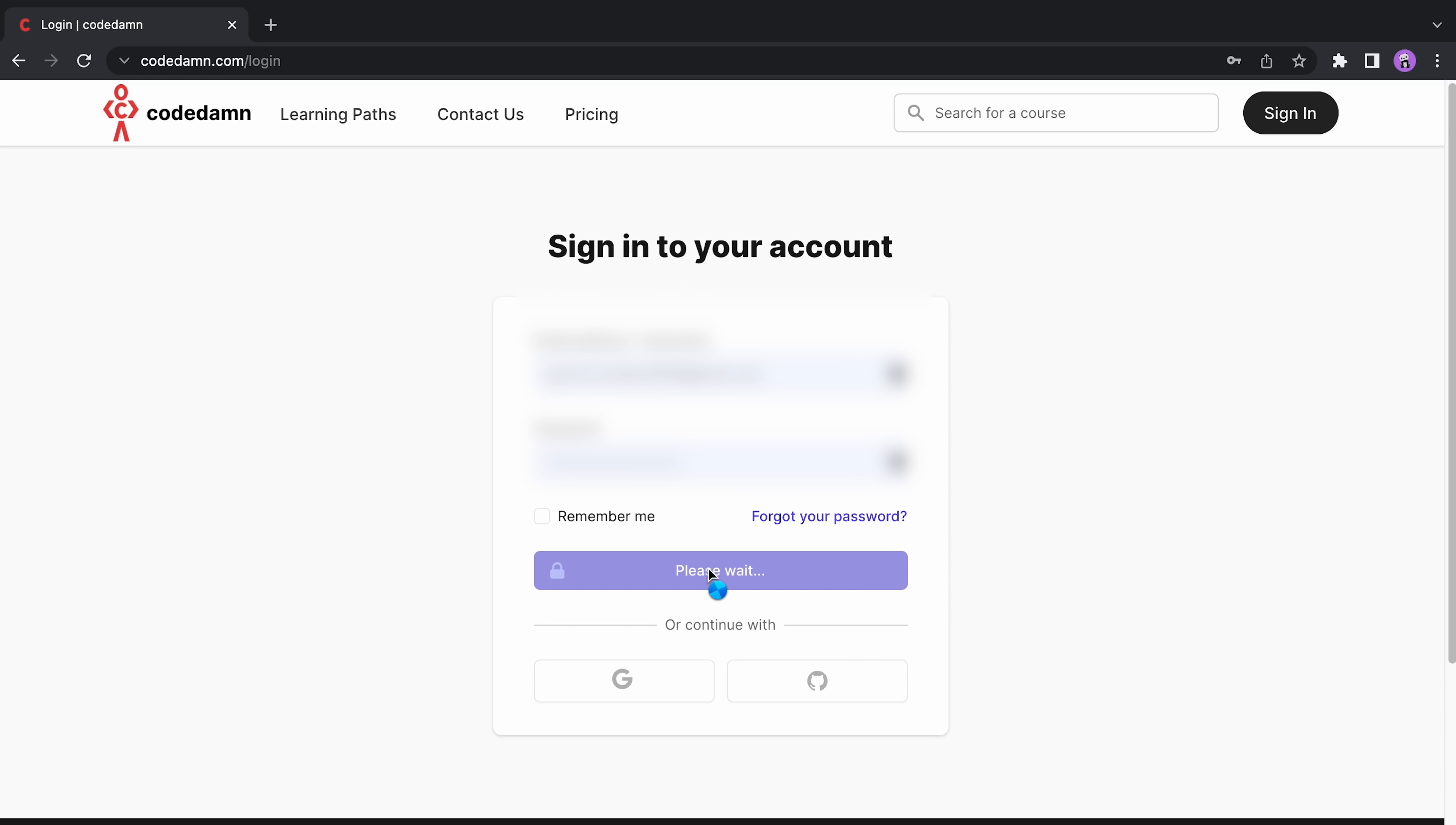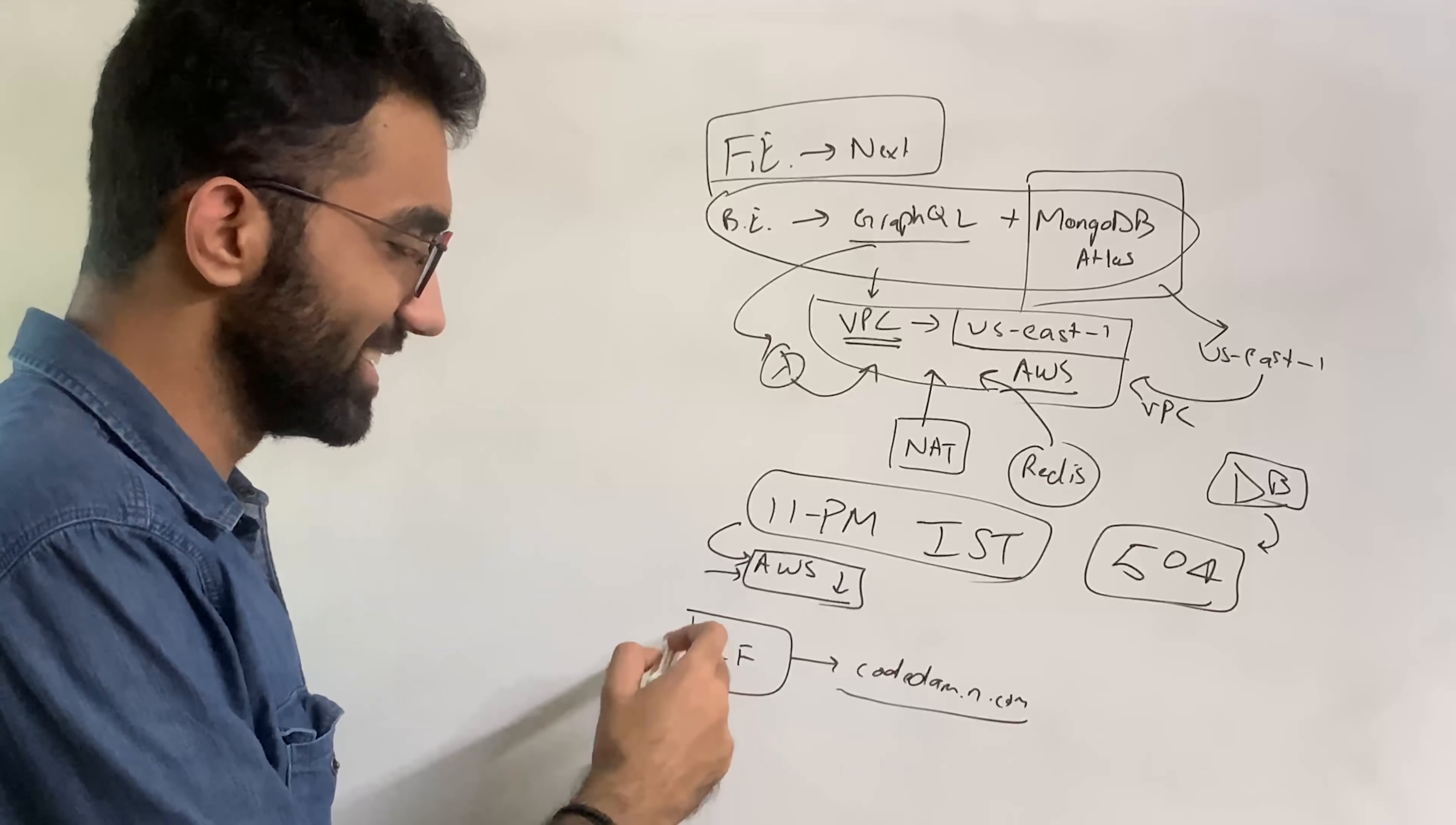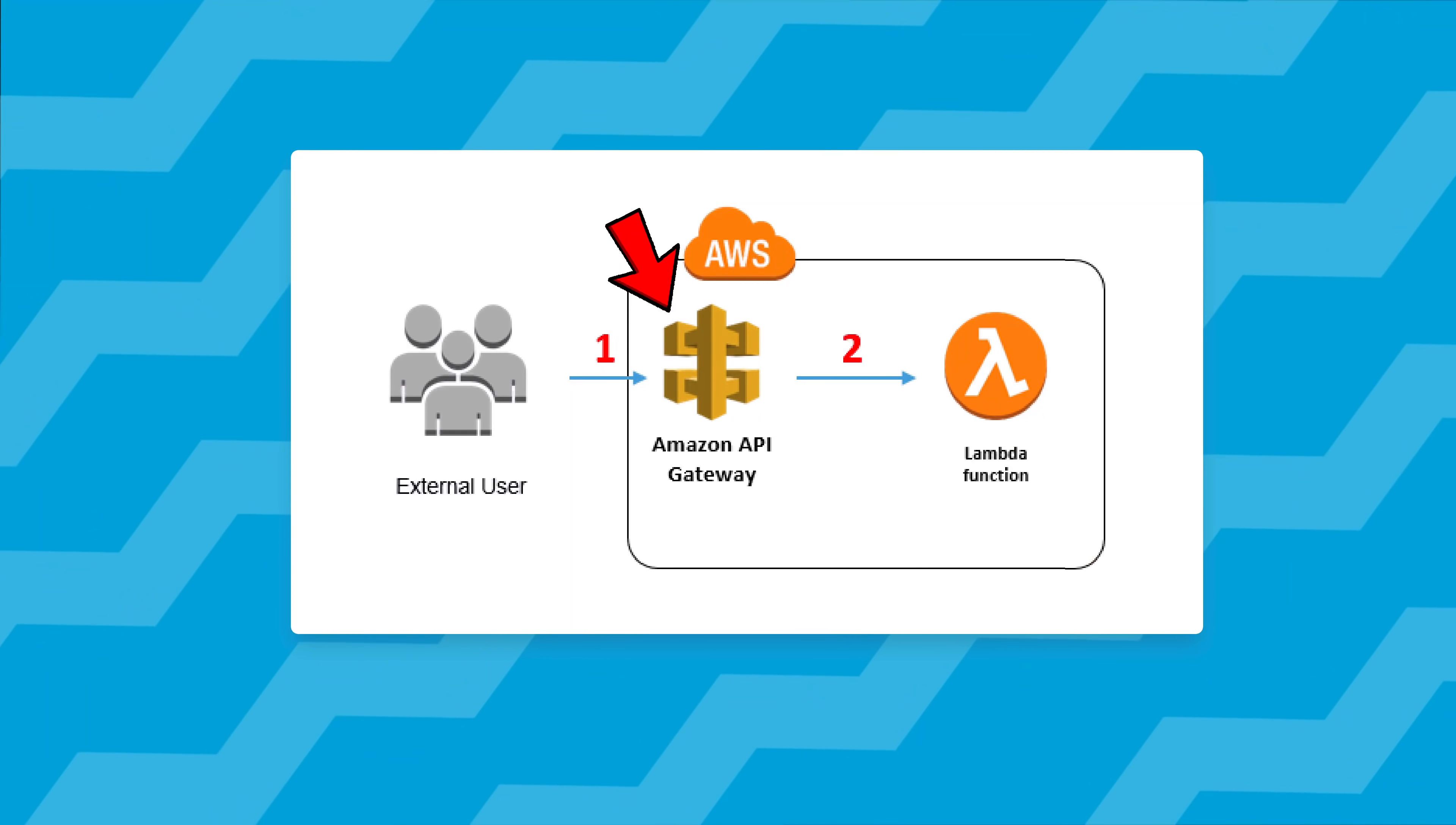You could technically browse on Codedam.com and see all the server-side generated pages. Everything was functional, links were clicking, but no backend call was being successful. The API gateway which sits in front of Lambda basically went down, so it was impossible for any client to connect to our backend, which pretty much makes the whole website useless.